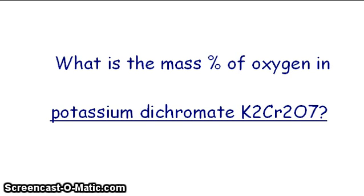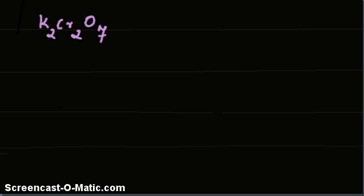What is the mass percentage of oxygen in potassium dichromate K2Cr2O7? The meaning of this question is what is the ratio of mass of oxygen component to the mass of whole compound?